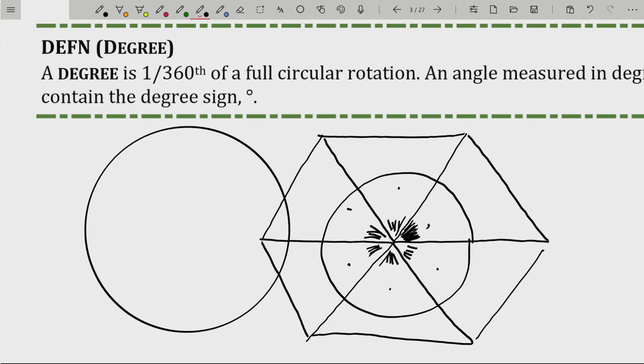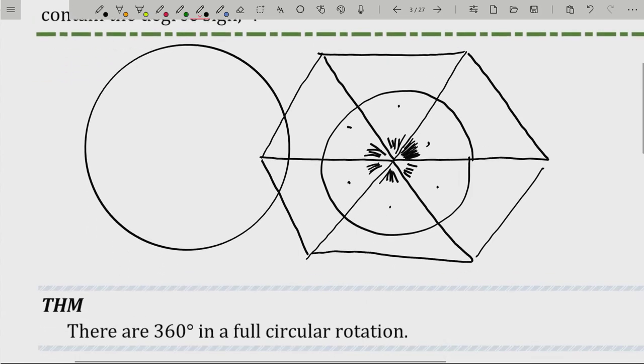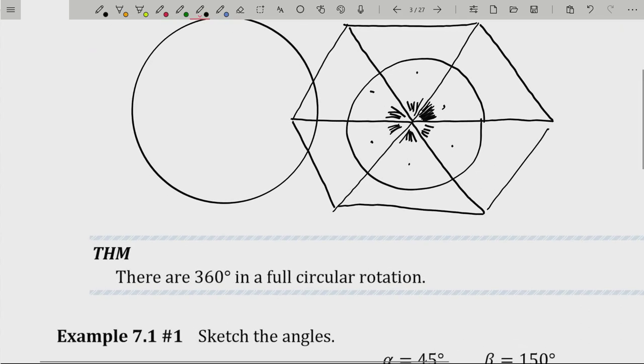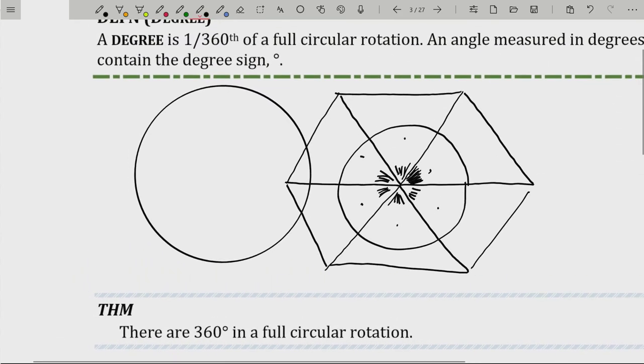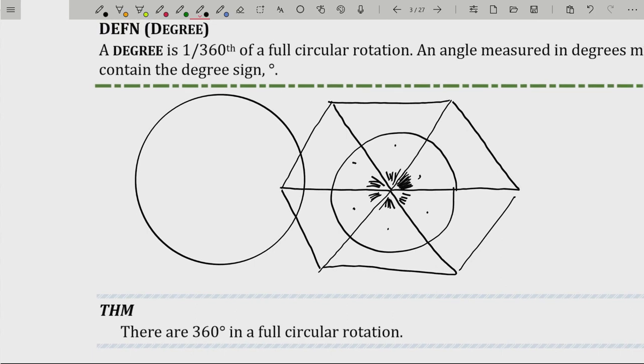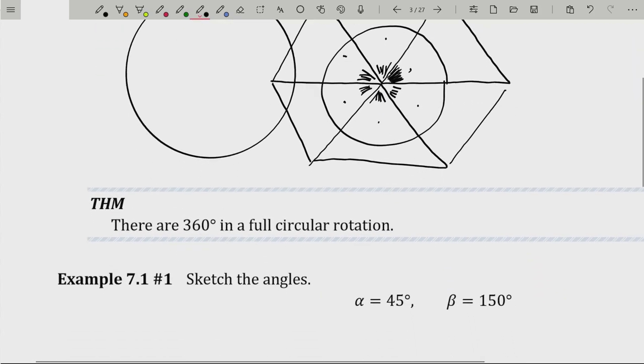I'm sure in the comments section, somebody is going to say, no, that's not exactly how it was done. I'm totally fine with that. Whatever. But this gives us the next theorem. There are 360 degrees in a full circular rotation. And that is because one three sixtieth of a full circular rotation is defined to be one degree. So therefore 360 of them would be a full rotation. So that's just that.